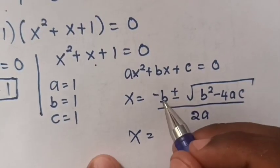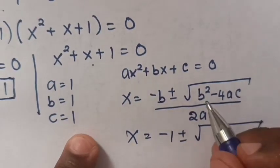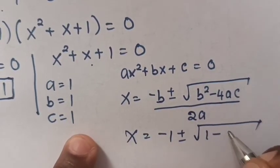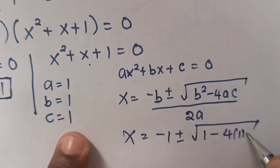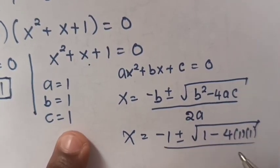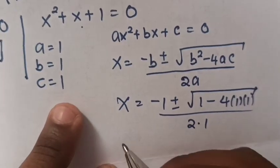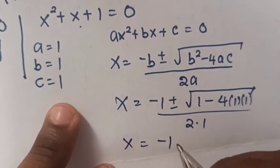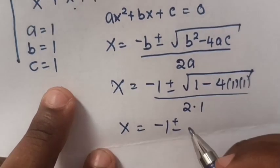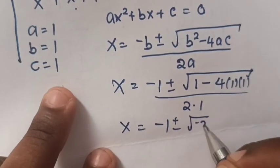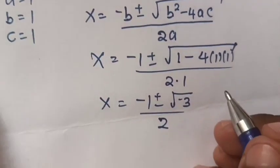x = (-b ± √(b² - 4ac)) / 2a, where b = 1, so x = (-1 ± √(1² - 4·1·1)) / (2·1). Therefore x = (-1 ± √(1 - 4)) / 2, which gives x = (-1 ± √(-3)) / 2.